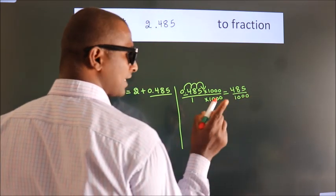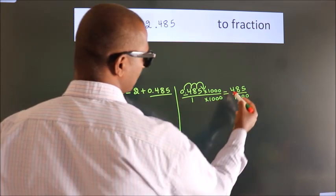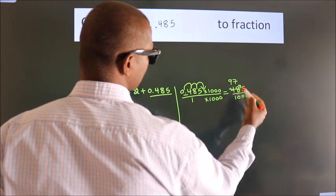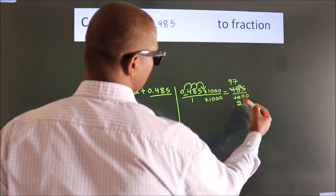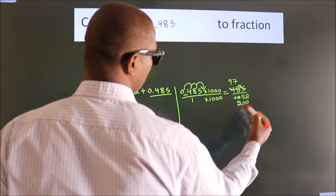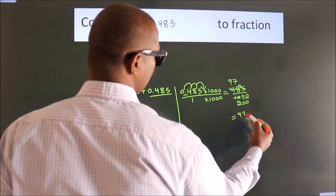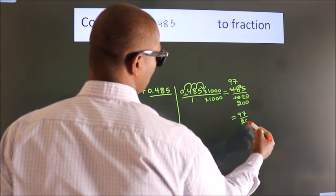Now I cancel with 5. 5 into 485 is 97, 5 into 1000 is 200. So the fraction we got is 97 by 200.